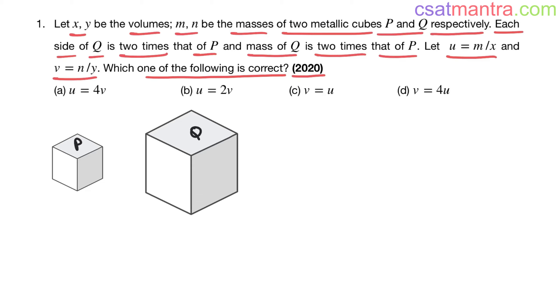We have two cubes, P and Q. m and n are their masses, x and y are their volumes. Each side of Q is two times that of P. Let P's side be a units, then Q's side would be 2a. Clear? We have a cube here, all sides equal, so if we know one side, other sides are same. Mass of Q is two times that of P. n is two times m, so n = 2m.